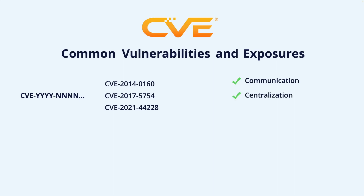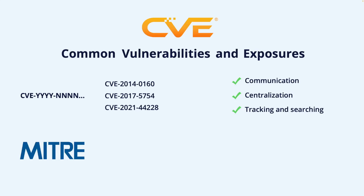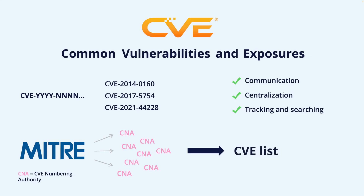It also allows easy centralization of the information and it allows us to track and search for information regarding a specific vulnerability. The MITRE Corporation is responsible for maintaining the CVE list and also to assign new CVE identifiers to vulnerabilities. However, this responsibility is also delegated to a number of so-called CVE Numbering Authorities that can collect information and allocate identifiers, which are then later published to the CVE list maintained by MITRE.